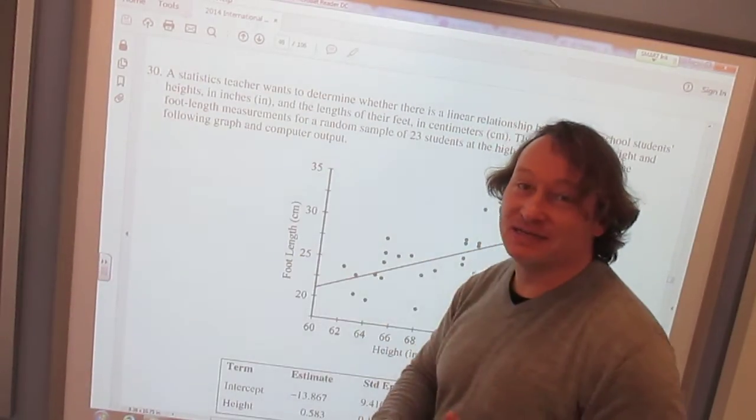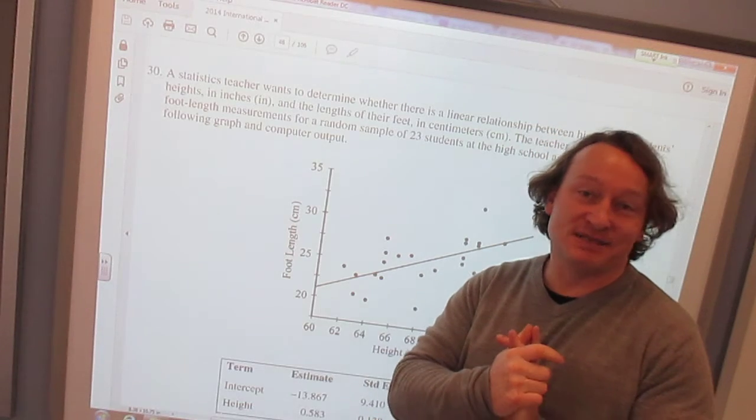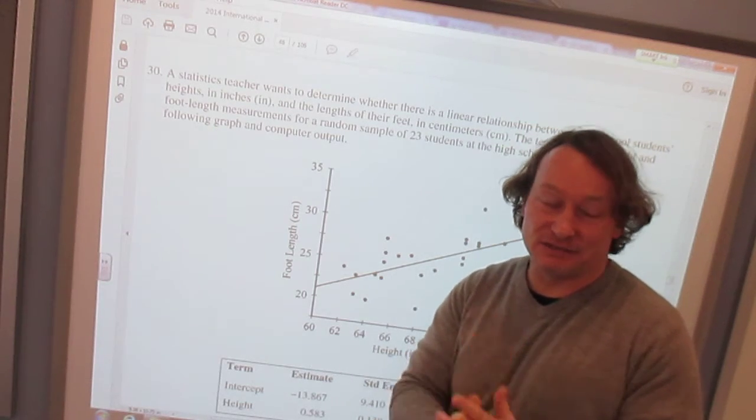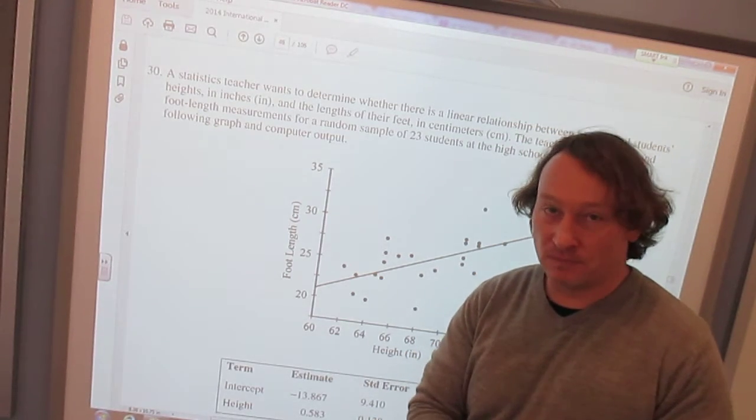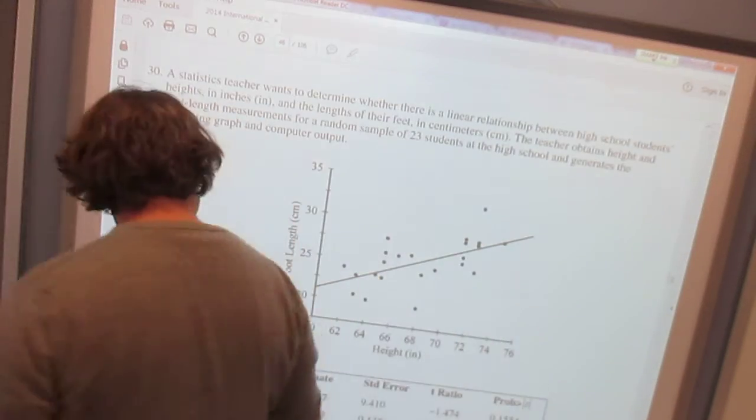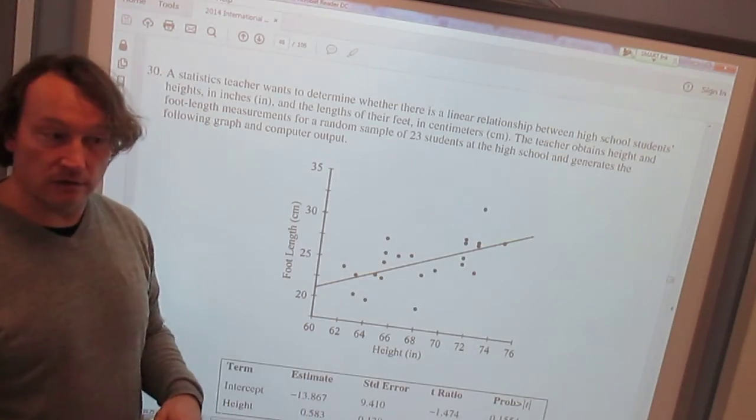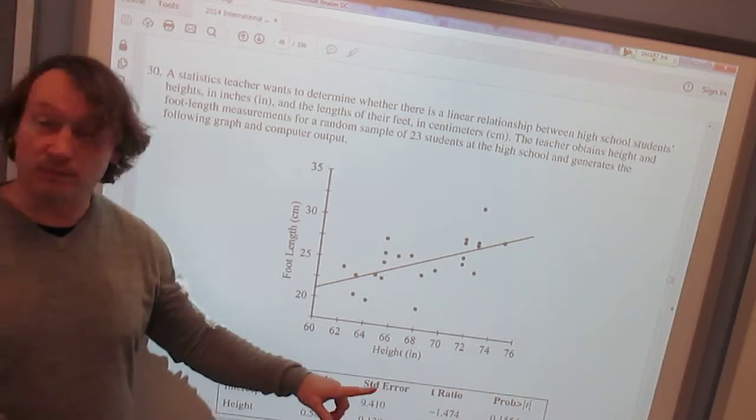Alright, so the one we're doing right now has to do with creating a confidence interval for the slope. Disregard what I told you earlier about the square root at the bottom.